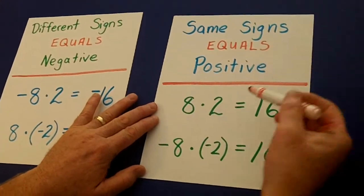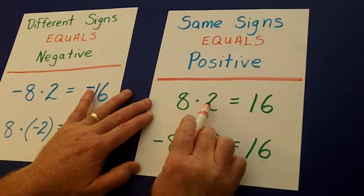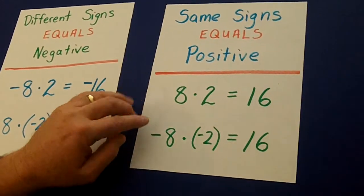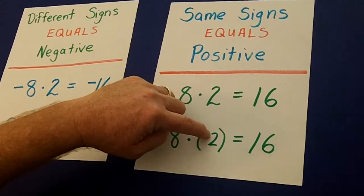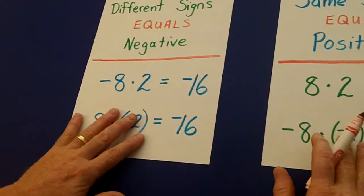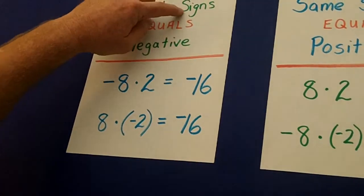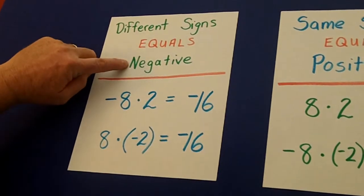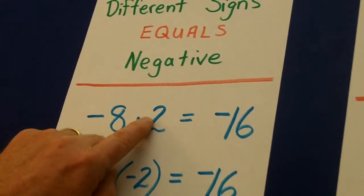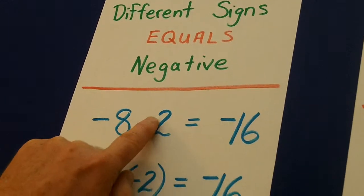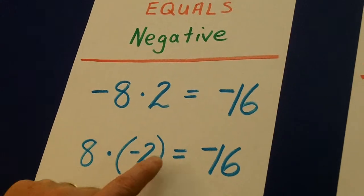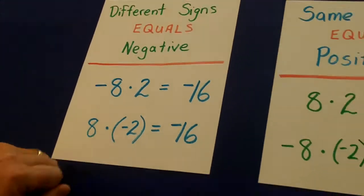If the signs are the same — both positive or both negative — then the answer is positive. So negative 8 times negative 2, the signs are the same, so the answer is positive. Now, if we go over to different signs, different signs equals a negative answer. So negative 8 times positive 2 is negative 16. Signs are different, so positive times a negative is a negative.